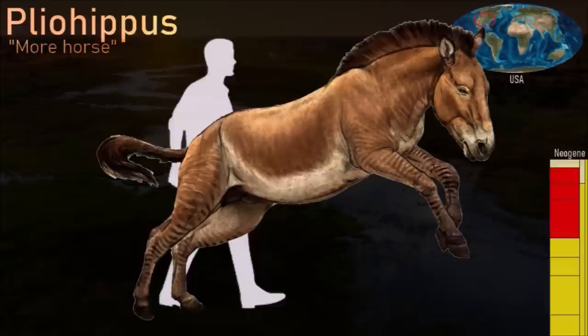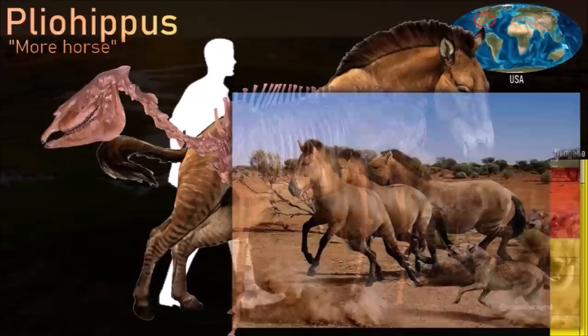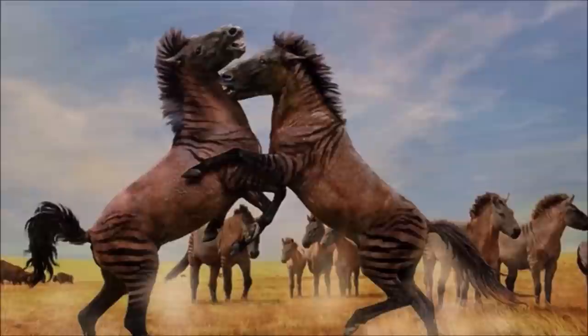Pliohippus was an early one-toed horse that still had two vestigial side toes on each hoof. It was about the size of a zebra and slightly smaller than most species of modern horses. For many years it was thought that Pliohippus was the ancestor of Equus, but it has deep pockets on the facial region and its teeth were strongly curved, while those of Equus are straight. Scientists currently think that Equus is descended from Dinohippus, with Pliohippus as part of a lineage of horses that included Calippus and Astrohippus.